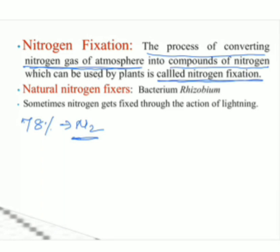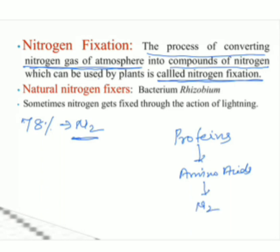Animals cannot take nitrogen directly; animals depend on plants for nitrogen. Why is nitrogen necessary? We require proteins, and these proteins are made up of amino acids. Amino acids are made up of nitrogen, so proteins are made up of nitrogen. Without nitrogen, proteins cannot be synthesized. So plants take nitrogen in different forms.